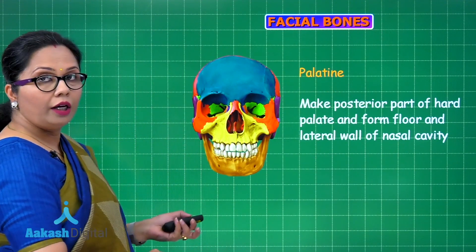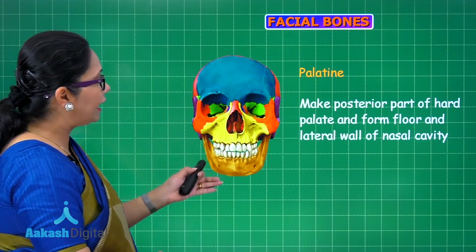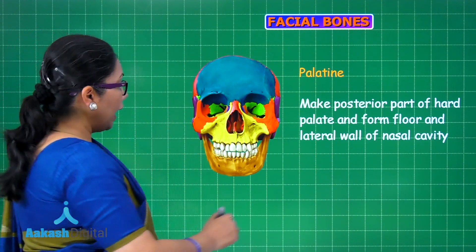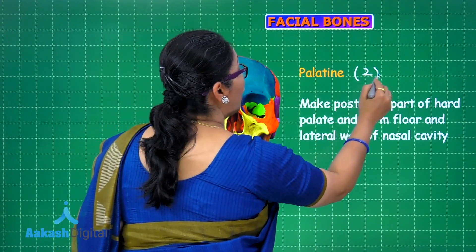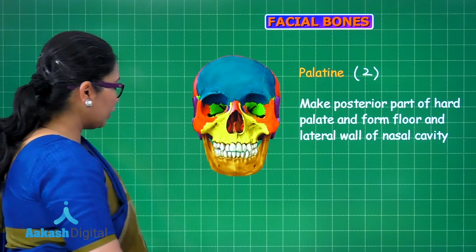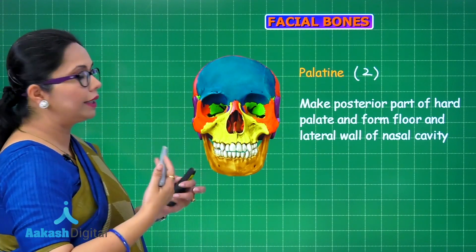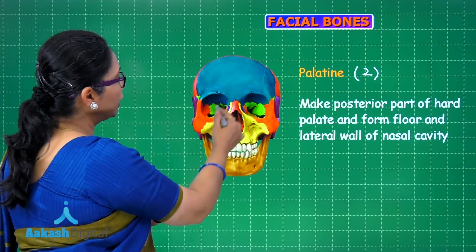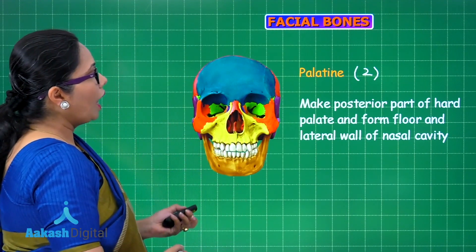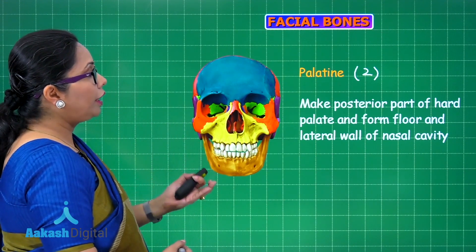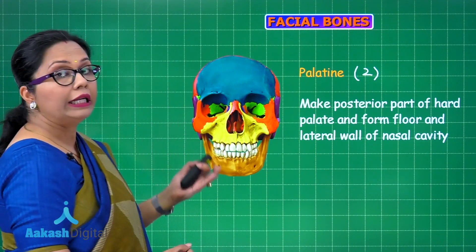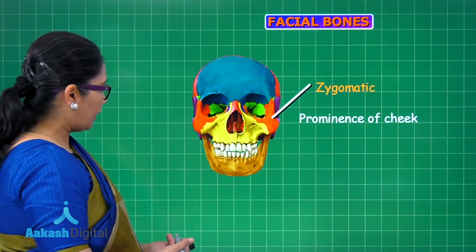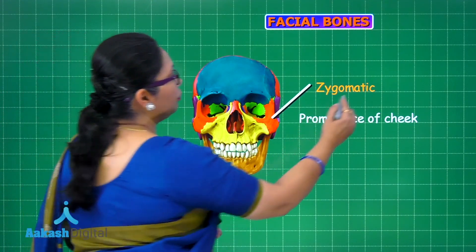The palatine bones are paired and form the posterior part of the hard palate. In the buccal cavity the upper part — the hard palate — comprises the palatines (posteriorly) and the maxilla (anteriorly). The palatine also forms the floor of the nasal cavity, which is the same as the roof of the buccal cavity.